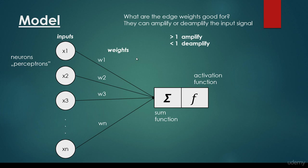What are the edge weights good for? They can amplify or deamplify the input signal. If the edge weight's value is smaller than one, it is going to deamplify this input value. If it's greater than one, then it's going to amplify the input value. So it's very important to see what edge weights are good for — they can amplify or deamplify the input signals.